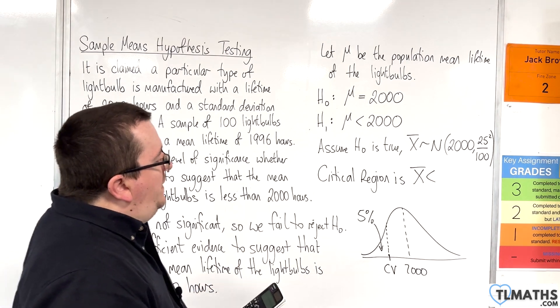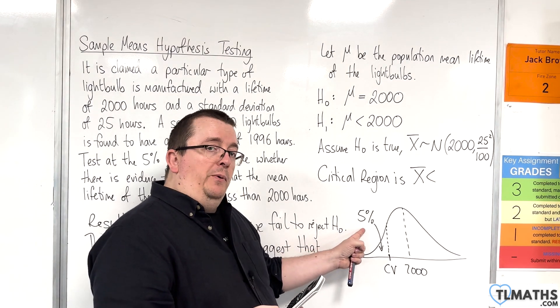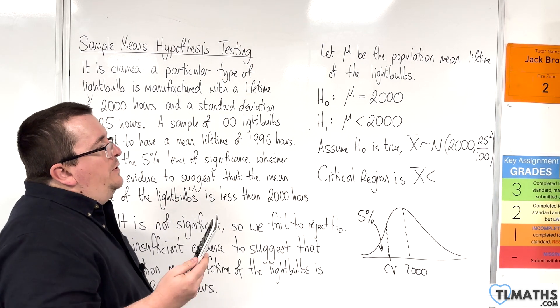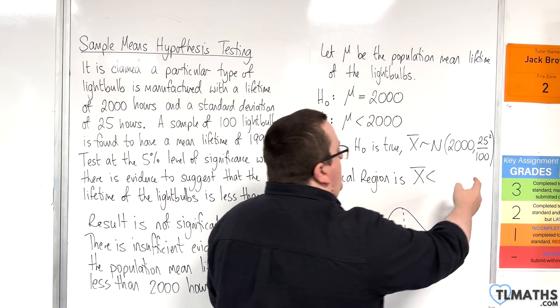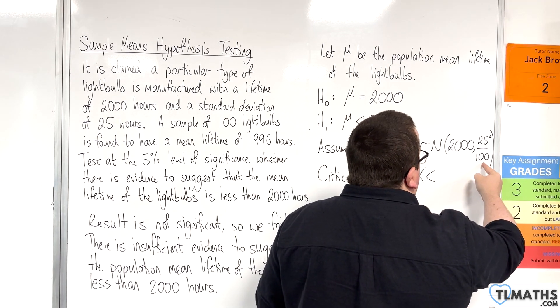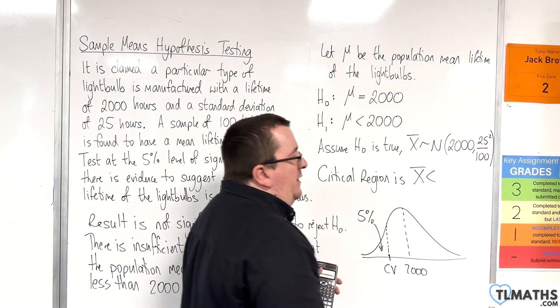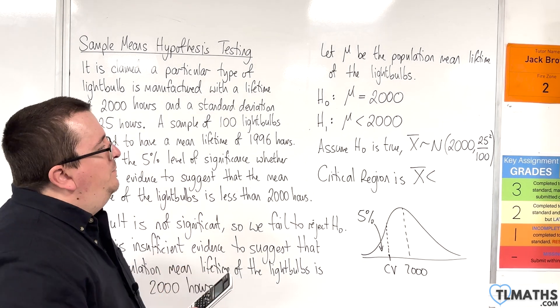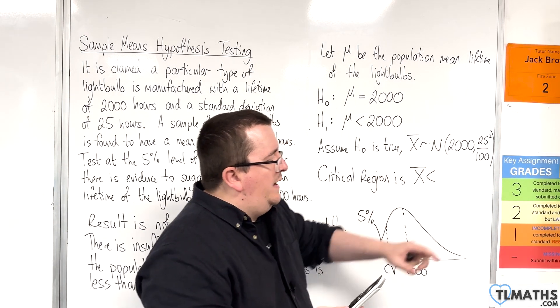And I'm going to put the area in as 5%, so 0.05. Sigma is the square root of 25 squared over 100, which is just 25 over 10, isn't it? So, 2.5 goes in there. And the mean is 2,000.